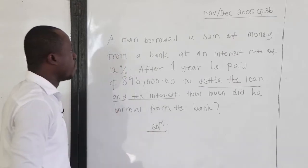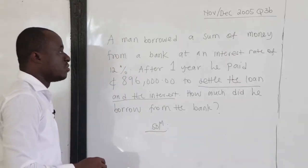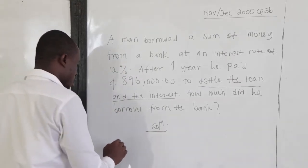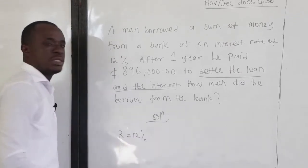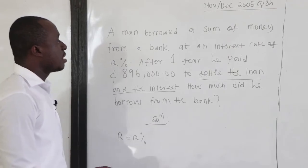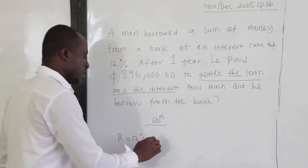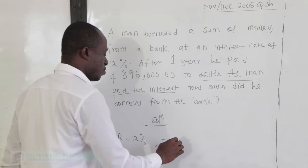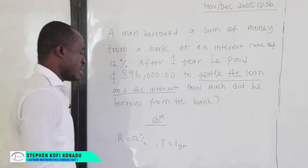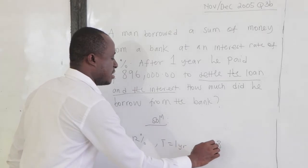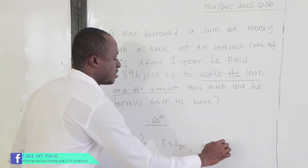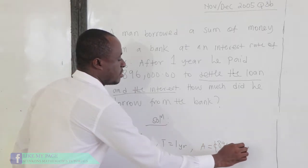Now, a man borrowed a sum of money from a bank at an interest rate of 12%. So clearly, R is 12%. At an interest rate of 12%, after one year. So clearly, our time is 1. And then, the amount given us is $896,000.